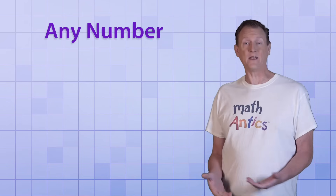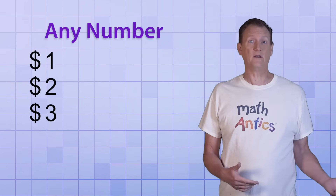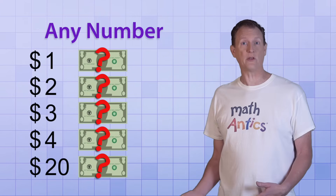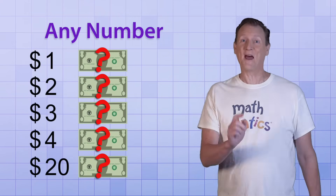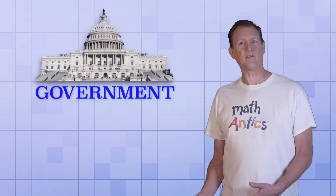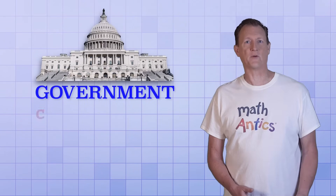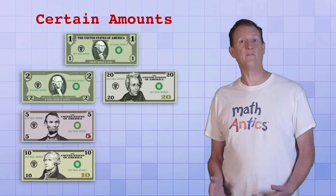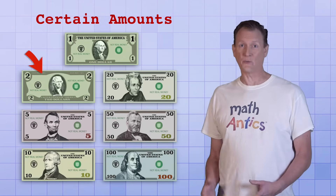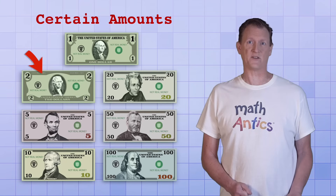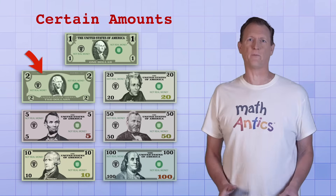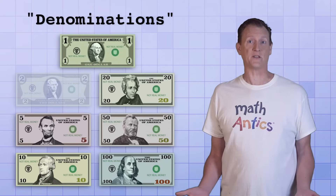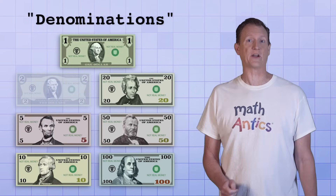But you could have any number of dollars — one, two, three, four, twenty. Is there a different paper bill for each amount you could have? Nope. That would get out of hand pretty quickly. The US government currently only prints bills for certain amounts like one, two, five, ten, twenty, fifty, and a hundred. Although the two dollar bill is rarely used by businesses nowadays, so we're just going to ignore it for this video. Sorry, Thomas Jefferson. These special amounts, called denominations, are like the building blocks of American currency.